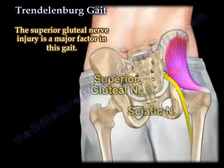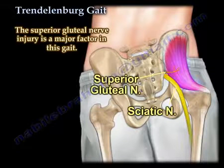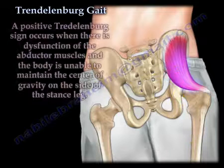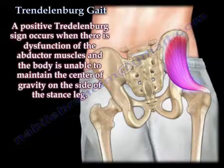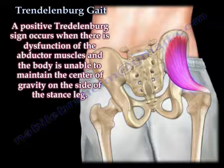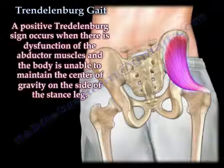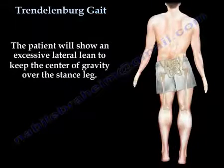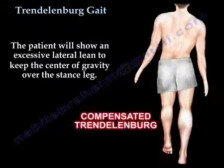The superior gluteal nerve injury is a major factor in this gait. A positive Trendelenburg sign occurs when there is dysfunction of the abductor muscles and the body is unable to maintain the center of gravity on the side of the stance leg. The patient will show an excessive lateral lean to keep the center of gravity over the stance leg.